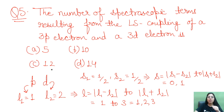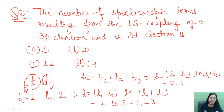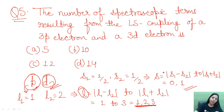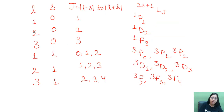The fifth question: find the number of spectroscopic terms resulting from LS coupling of a 3p electron and a 3d electron. This is a non-equivalent electron case. For p, L₁ = 1; for d, L₂ = 2. The combined L values range from |L₁−L₂| to L₁+L₂, giving L = 1, 2, 3 (i.e., P, D, F). For spin: s₁ = s₂ = 1/2, so S = 0 or 1.